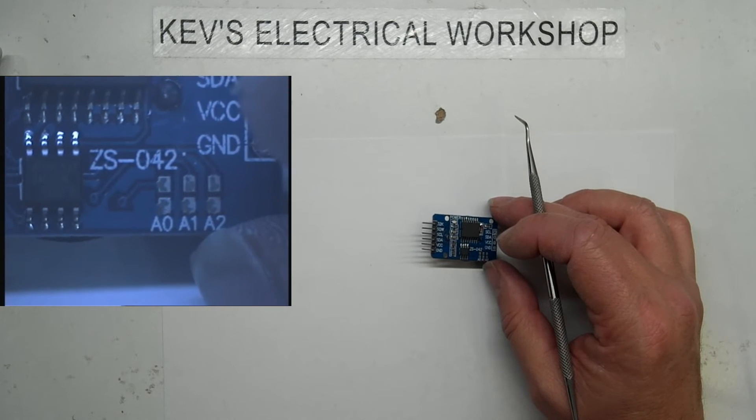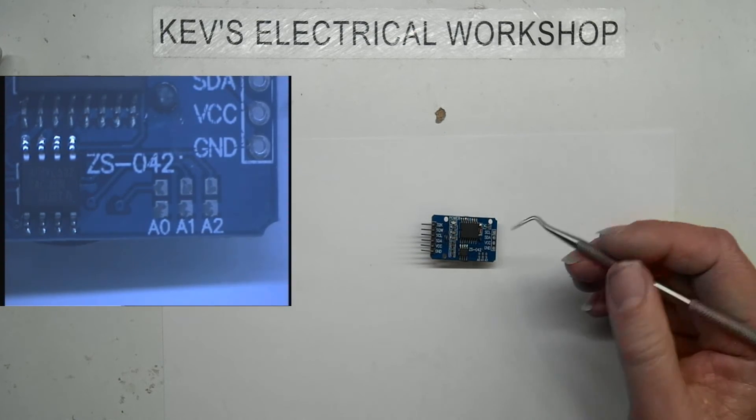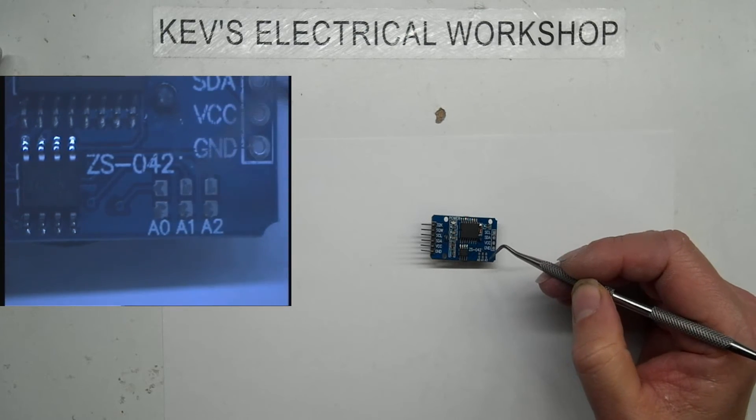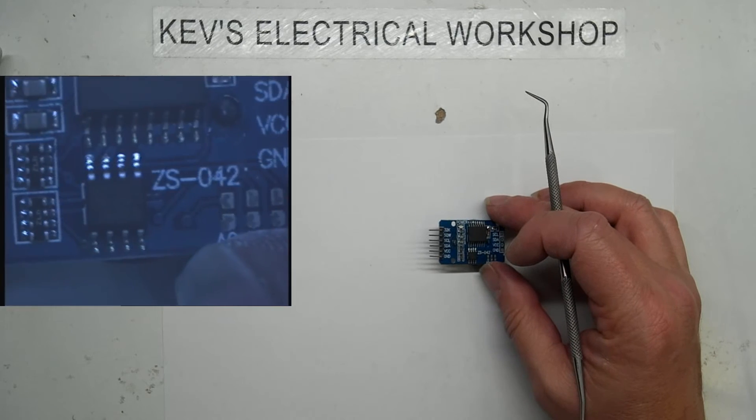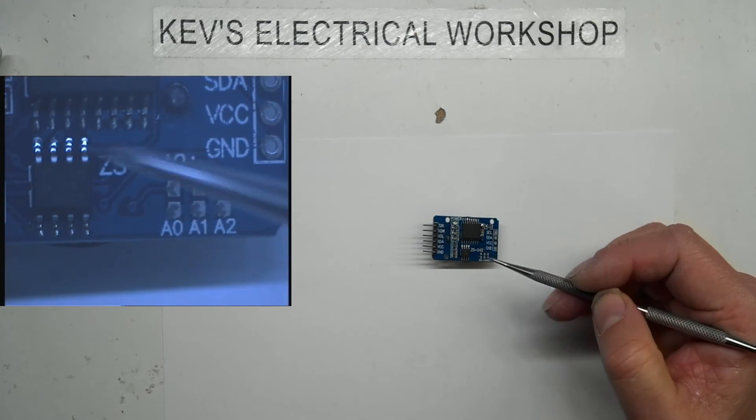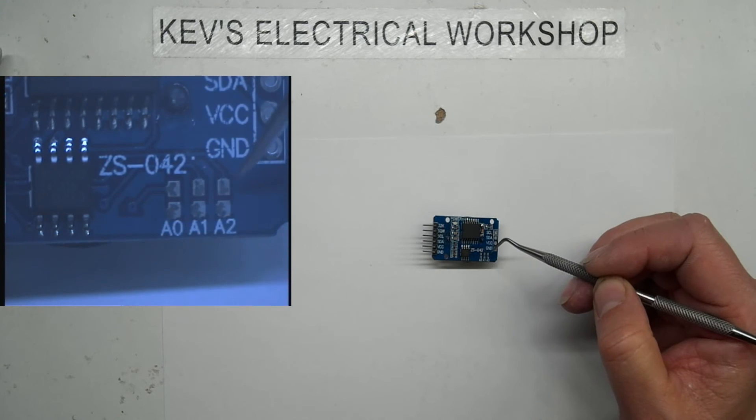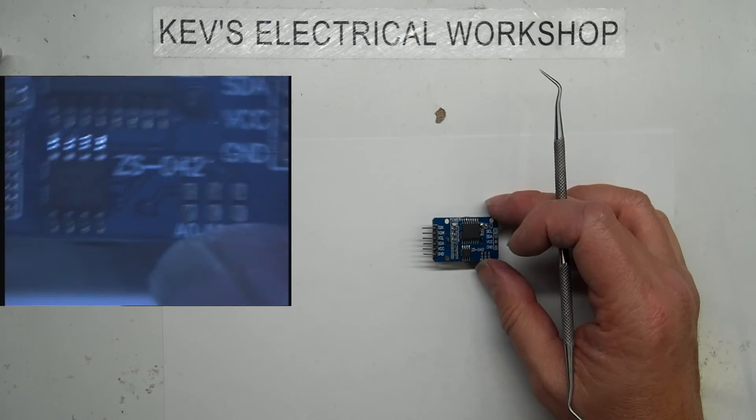I think you can daisy chain 15 of them and I presume this may be the addressing for this. Obviously if you've just got one it's going to be blank. If you daisy chain another one I would presume you've probably got to make one of these links. Again I haven't looked.